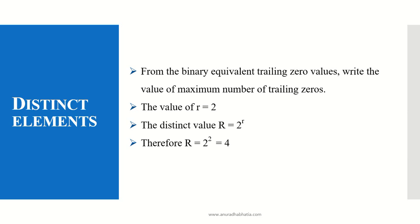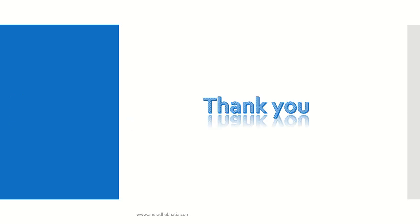When we took the input stream, we considered that we will get 4 distinct values: 1, 2, 3, and 4. This we have now proved using the FM algorithm. So the distinct elements are 1, 2, 3, and 4. This is how the FM algorithm is used to calculate and find out the distinct elements from a series of input numbers. Thank you.